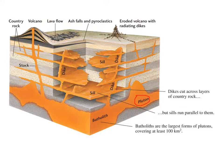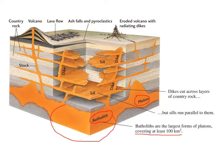If you have a really big feature — a lot of magma over a really extensive area, covering at least 100 square kilometers — a really big pluton is called a batholith. Plutons can be either massive, basically a big blob shape, or they can be tabular, meaning they're flat in one direction.